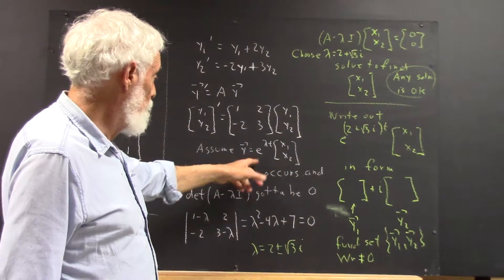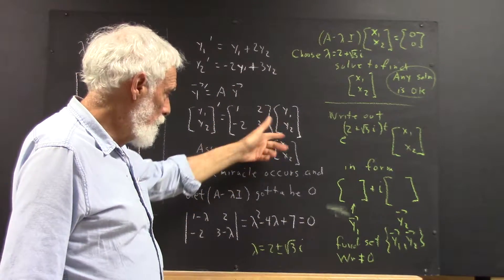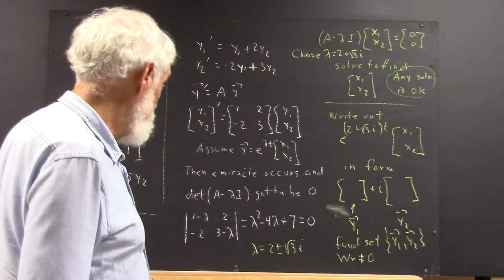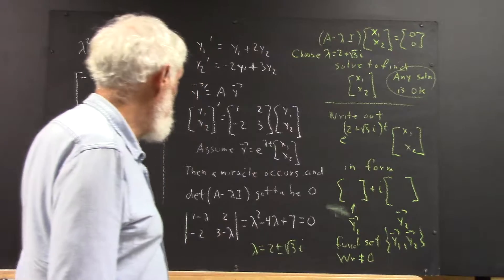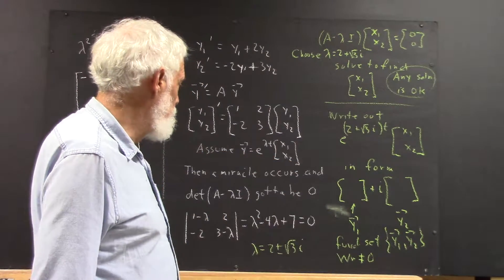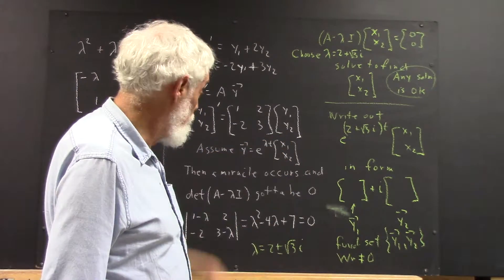We're going to again assume y equals e to the lambda t times some x1, x2, and we're going to find x1, x2. Having made this assumption, we're going to find lambda, then we're going to find x1, x2.